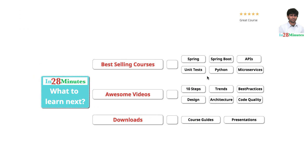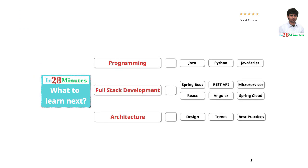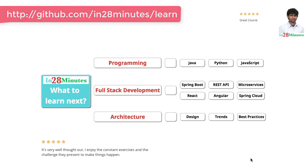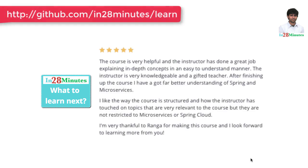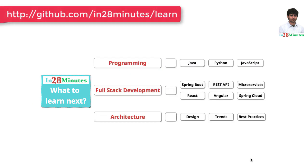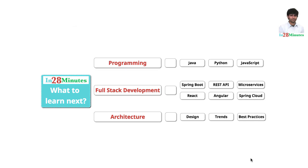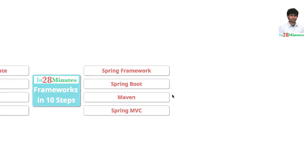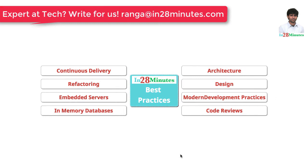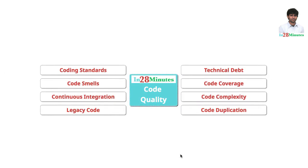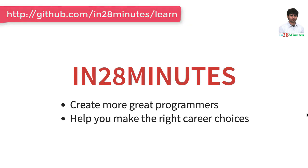The question is: what do you want to learn next? We are building solutions to help programmers at all levels. You can learn programming with our awesome courses on Java, Python, and JavaScript. You can learn full stack development with REST APIs and microservices with frameworks like Spring Boot, Node.js, React, Angular, and Spring Cloud. We have 200-plus videos to help you start your journey from a programmer to a software architect, covering frameworks, industry trends including microservices, and best practices in architecture, design, and code quality. Thanks for watching. Keep learning in 28 minutes.